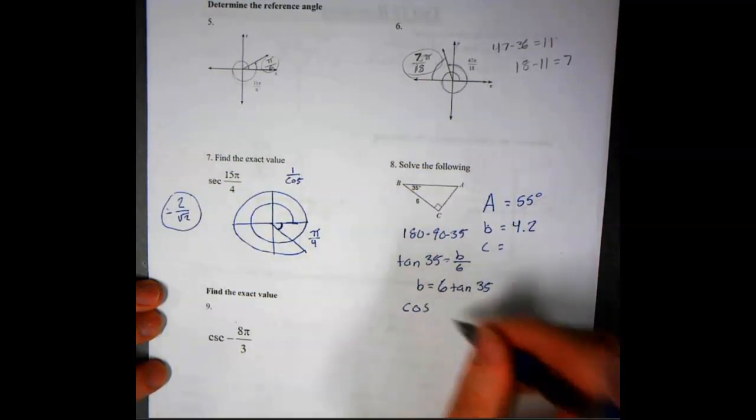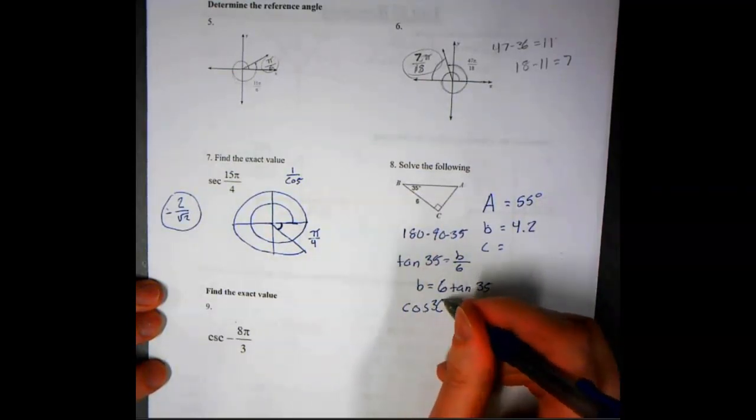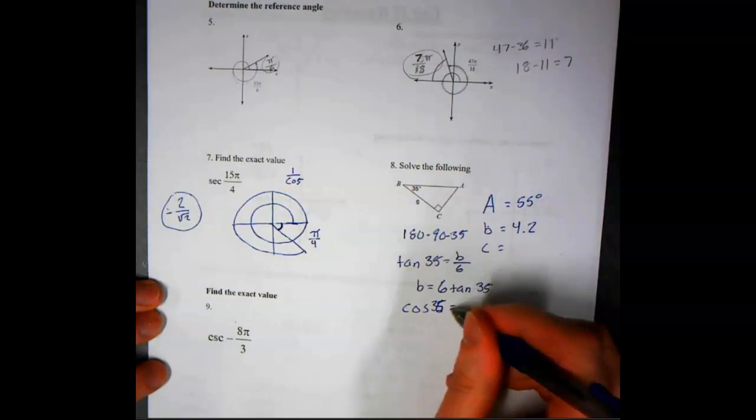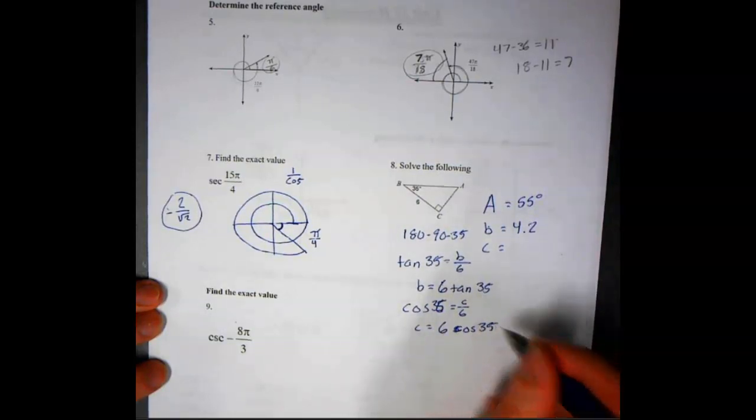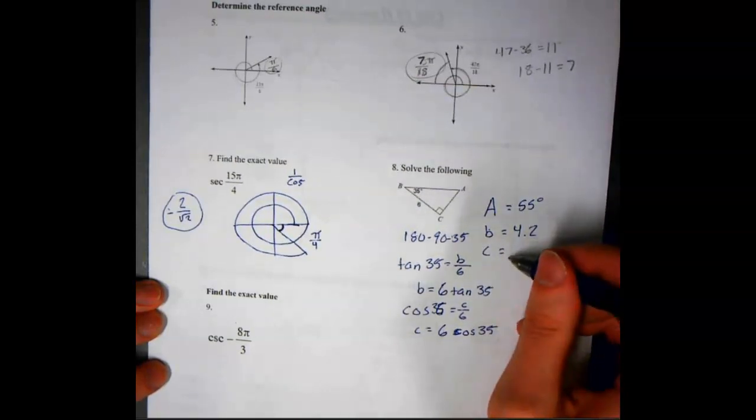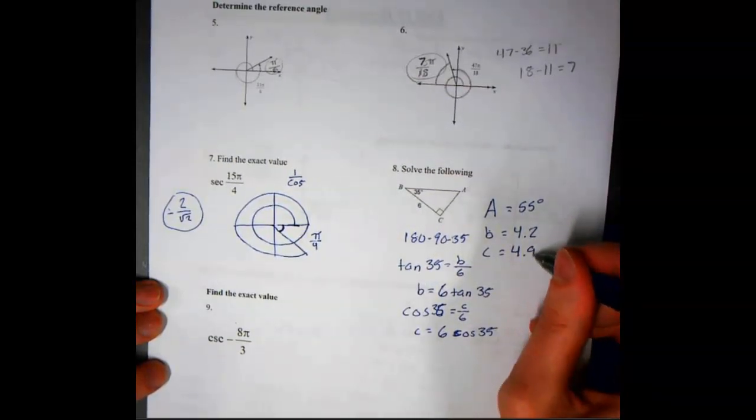For side C, we're going to say cosine of 35 equals C over 6. So C equals 6 cosine 35. Plug that into your calculator, and you should end up with about 4.9.